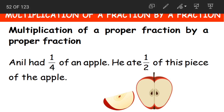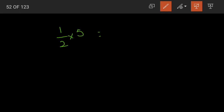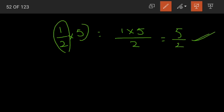Suppose we had a fraction 1/2 into whole number 5. We multiplied the numerator with the whole number, then divided by our denominator: 1 into 5 is 5, divided by 2. This was multiplication of a fraction by a whole number.